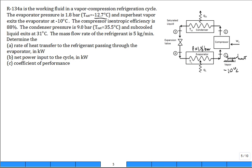The compressor isentropic efficiency is 88 percent. The condenser pressure is 9 bar. So the high side pressure is 9 bar, the low side pressure is 1.8 bar.